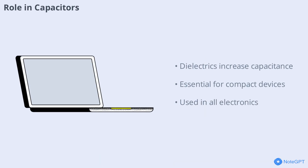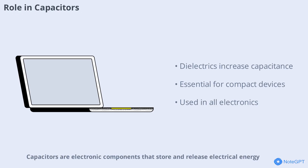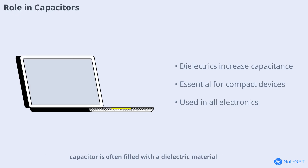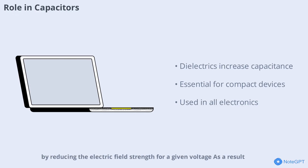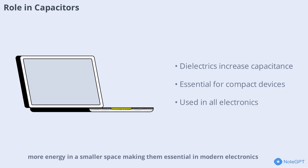Capacitors are electronic components that store and release electrical energy. The space between the plates of a capacitor is often filled with a dielectric material. This dielectric increases the capacitor's ability to store charge by reducing the electric field strength for a given voltage. As a result, capacitors with high-quality dielectrics can store more energy in a smaller space, making them essential in modern electronics, from smartphones to power supplies.